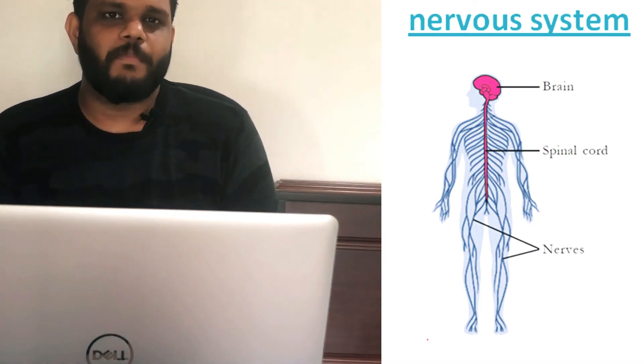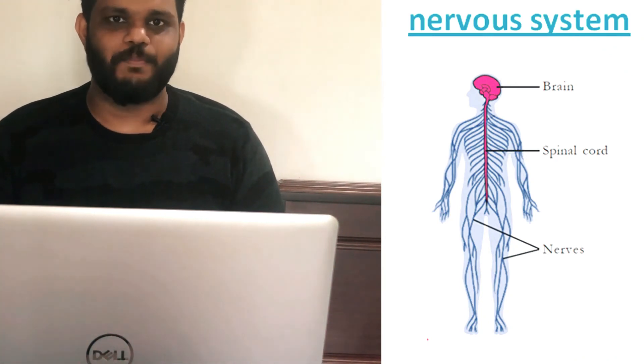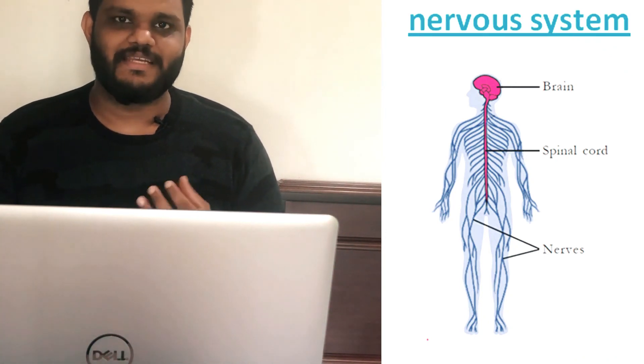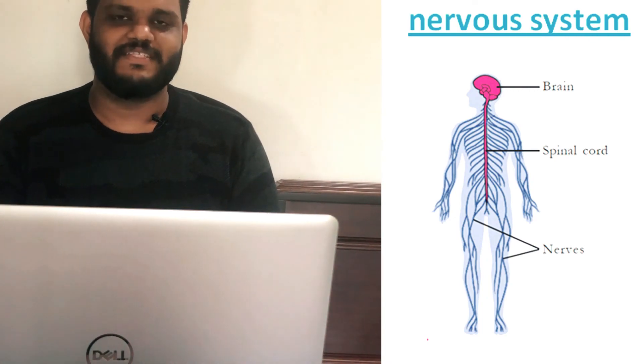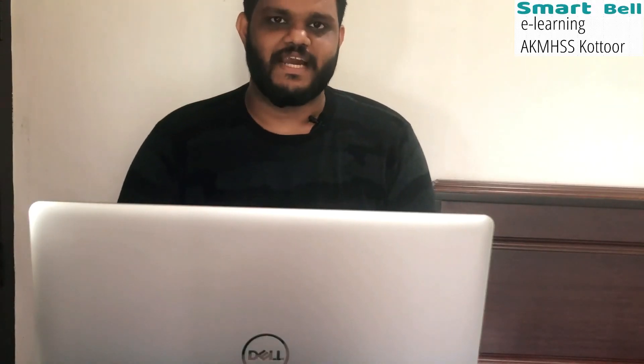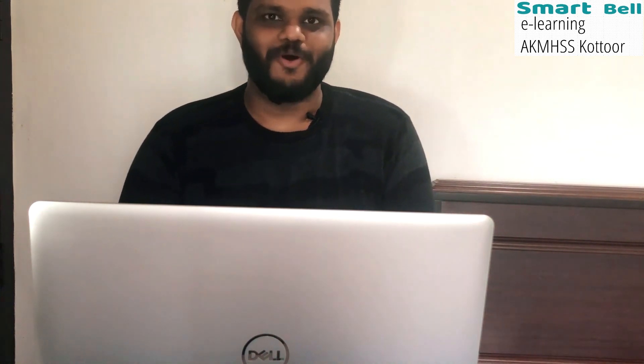What are the important parts of this nervous system? That is the brain, spinal cord, and nerves. These are the basic parts of the nervous system. In the next class we will study about the functions and structure of the nervous system.